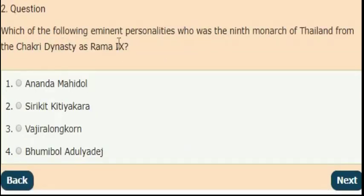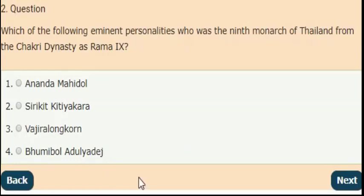Next question: which of the following eminent personalities was the 9th monarch of Thailand from the Chakri dynasty, known as Rama 9? The right answer is option 4 — Bhumibol Adulyadej was the 9th monarch of Thailand from the Chakri dynasty, Rama 9.